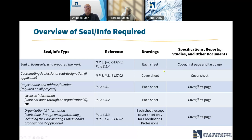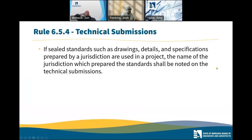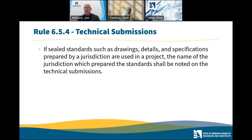Another new rule in rule section 6.5 is about using a jurisdiction's standard details in a drawing set. If you use those, the board requires that you put the name of the jurisdiction which prepared those standards. This rule went through a lot of iterations — some earlier ones had a lot more requirements tagged to it — but at the end of the process, the board wanted to start with something simple. They simply said: if you use those standard details, drawing specs, make sure the jurisdiction who prepared those documents is noted.